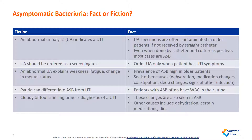The next myth is that an abnormal UA explains weakness, fatigue, or change in mental status. The truth is that the prevalence of asymptomatic bacteria in older patients is relatively high, so it's imperative to seek other causes of altered mentation, including dehydration, medication changes, etc.